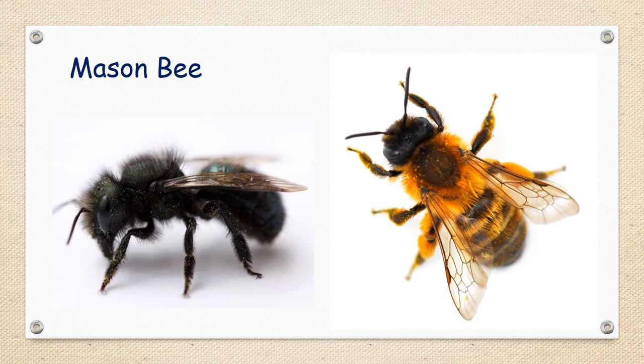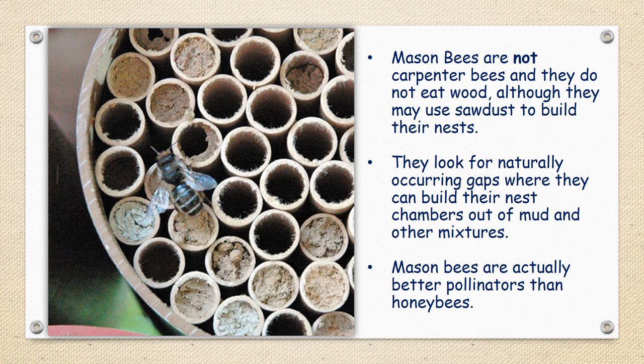The mason bee. This is a fuzzy bee and it is definitely a friend. Sometimes people think mason bees are carpenter bees, but they're not — they don't eat wood, although they might use sawdust to build their nests. They usually build nests where there are naturally occurring gaps, making chambers out of mud and other mixtures. They are actually better pollinators than honeybees, so that definitely puts them in the friend category.